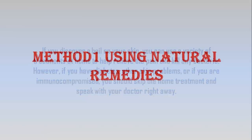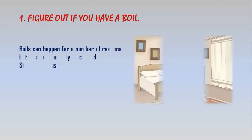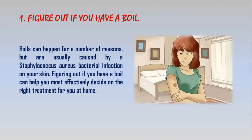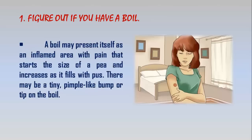Method 1: Using natural remedies. Step 1 - Figure out if you have a boil. Boils can happen for a number of reasons but are usually caused by a Staphylococcus aureus bacterial infection on your skin. Figuring out if you have a boil can help you most effectively decide on the right treatment for you at home. A boil may present itself as an inflamed area with pain that starts the size of a pea and increases as it fills with pus. There may be a tiny pimple-like bump or tip on the boil.